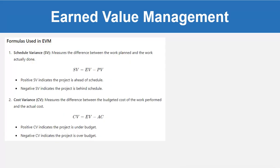Now let's talk about the formulas used in EVM. The first one is Schedule Variance (SV), which measures the difference between the work planned and the work actually done. The formula is: SV = EV minus PV. A positive SV indicates the project is ahead of schedule, and a negative SV indicates the project is behind schedule.